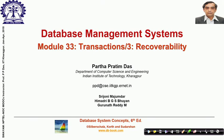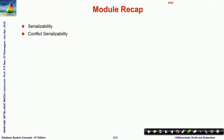Welcome to module 33 of Database Management Systems. This is the third and closing module on transactions. We will discuss recoverability issues and some more serializability issues in this module. In the last module, we talked at length about serializability, specifically conflict serializability and the algorithm to detect it.